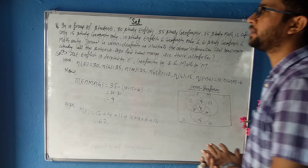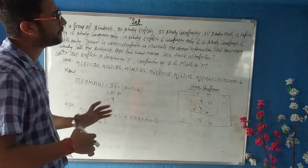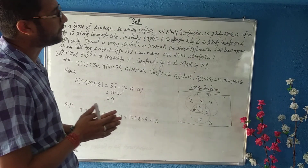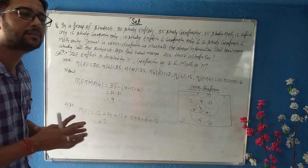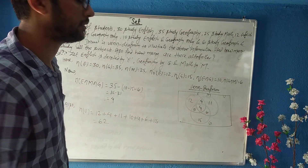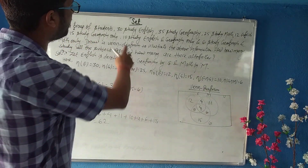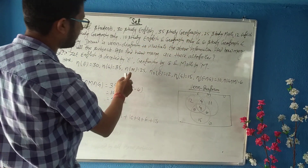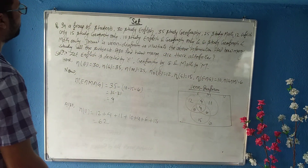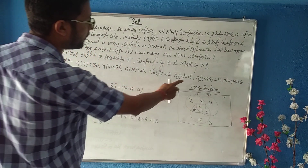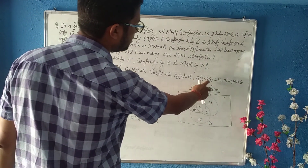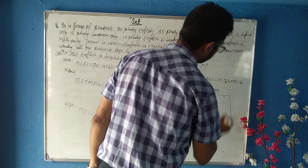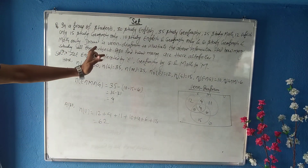Next we learn another type: when 'only' values are given, how to solve problems with three sets. In a group of students: n(E) = 30, n(G) = 35 geography, n(M) = 25 math. English only = 12, geography only = 15, English and geography only = 10, geography and math only = 6.